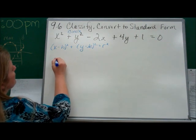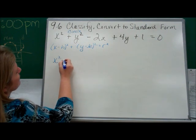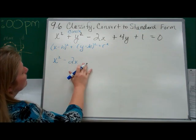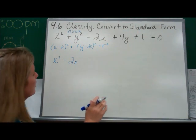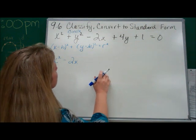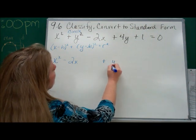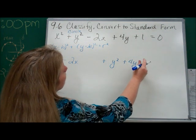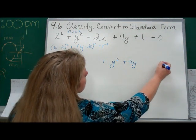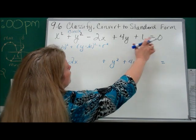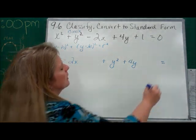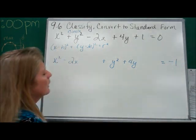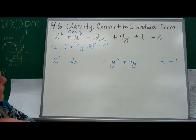Okay, so in our rearranging process, we're going to have x squared minus 2x. Now I'm going to skip a little space, and you'll see why that is in a moment. And then I'm going to say plus y squared plus 4y. I'm going to skip a little space. I'm going to say that equals, move the 1 over. It's going to become a negative 1.